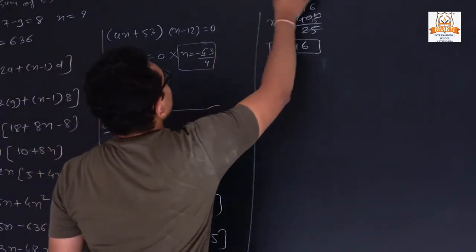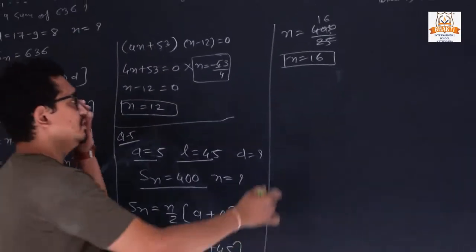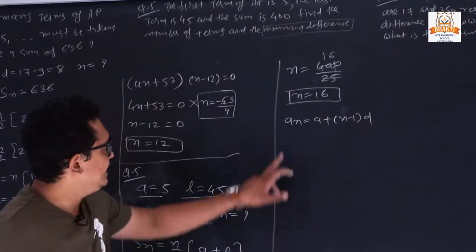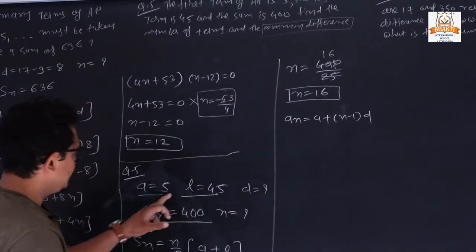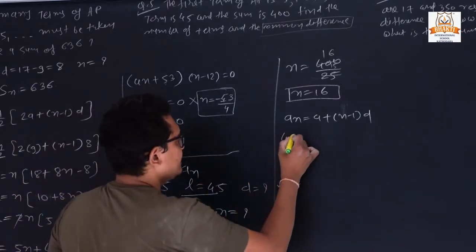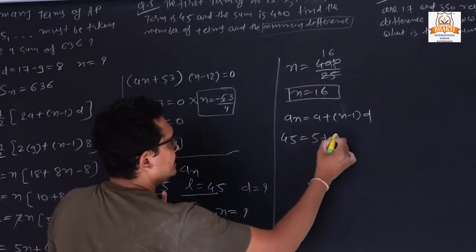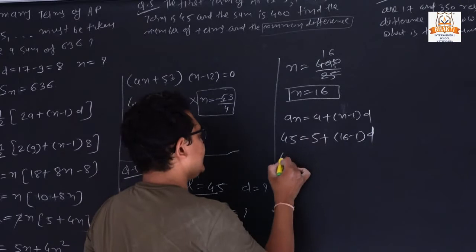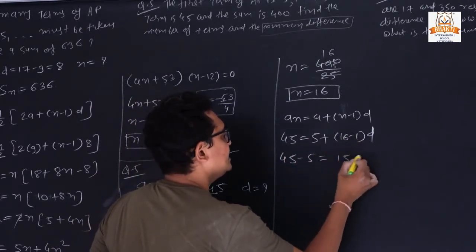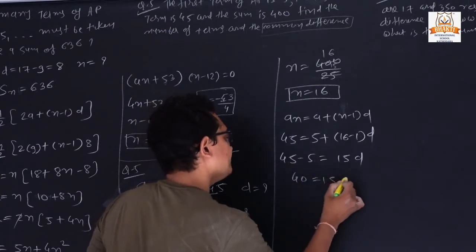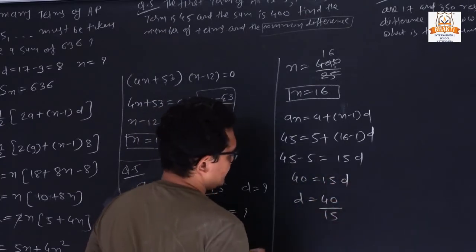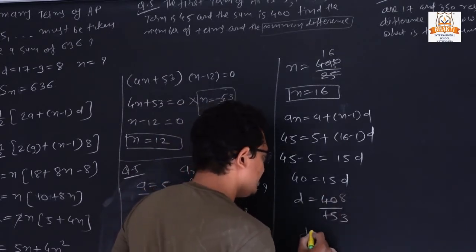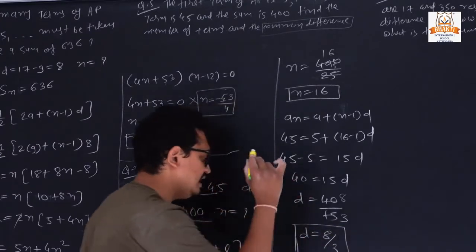Now we also need to find the common difference d. Since the last term is given, we use the formula: l = a + (n−1)×d. So 45 = 5 + (16−1)×d, giving 40 = 15d, so d = 40/15 = 8/3.